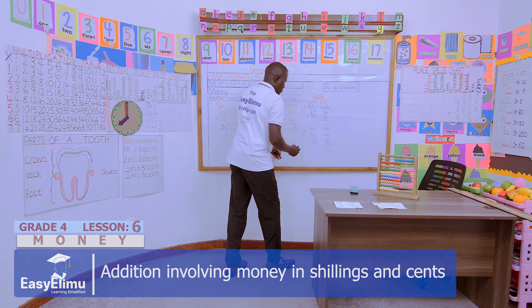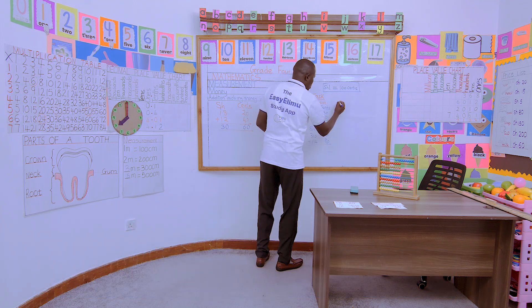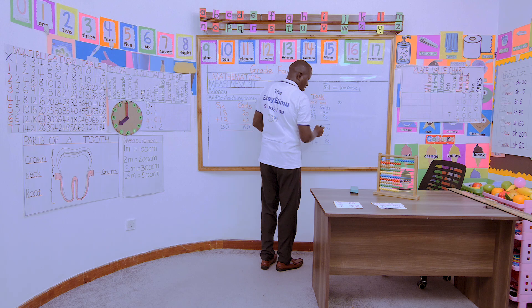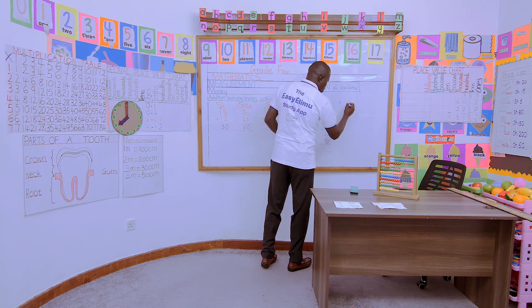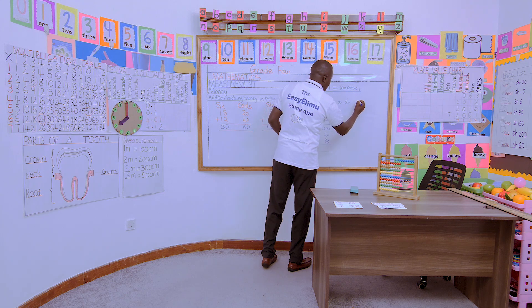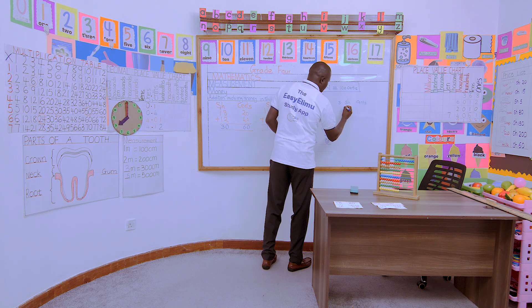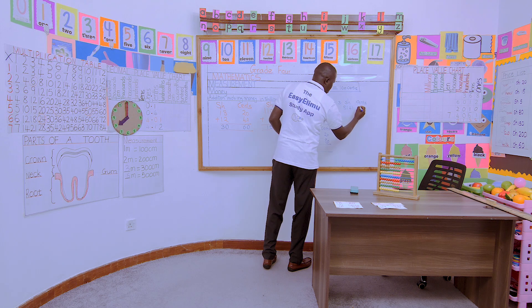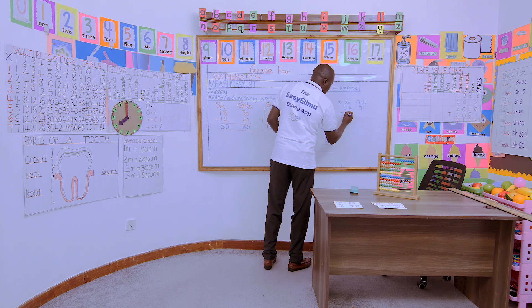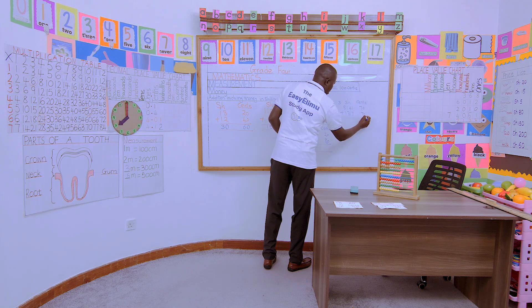Work number three: 8,141 shillings and 70 cents, we are adding 1,317 shillings and 70 cents.